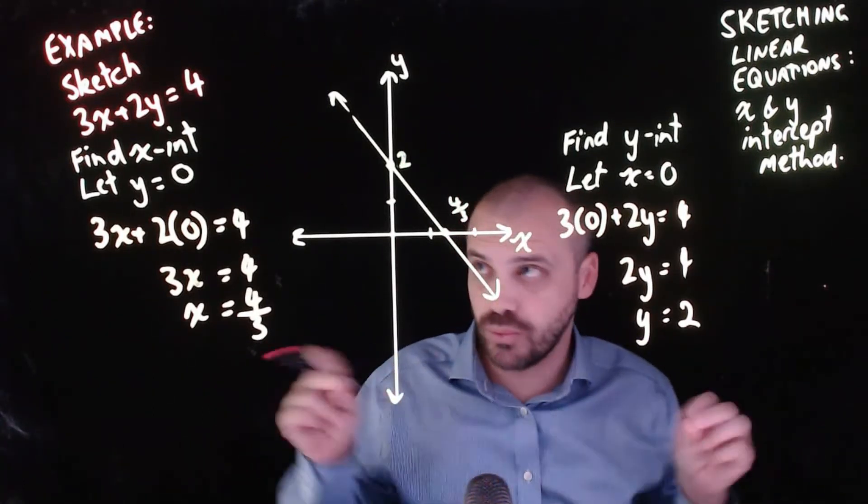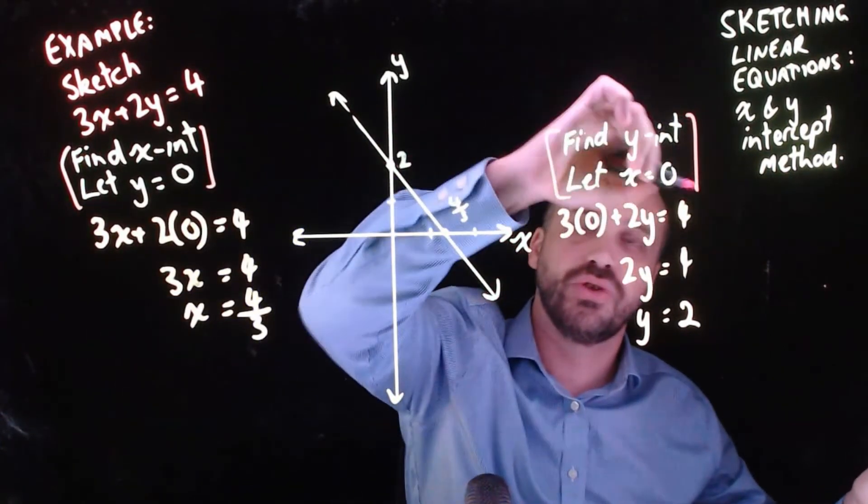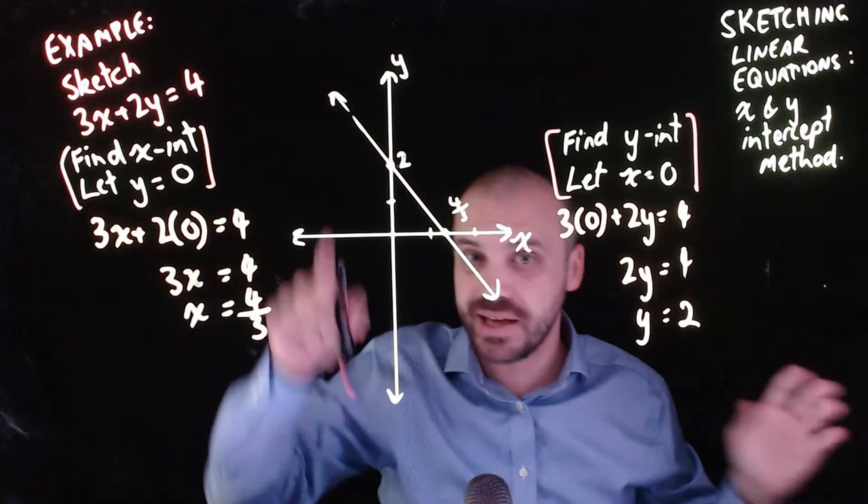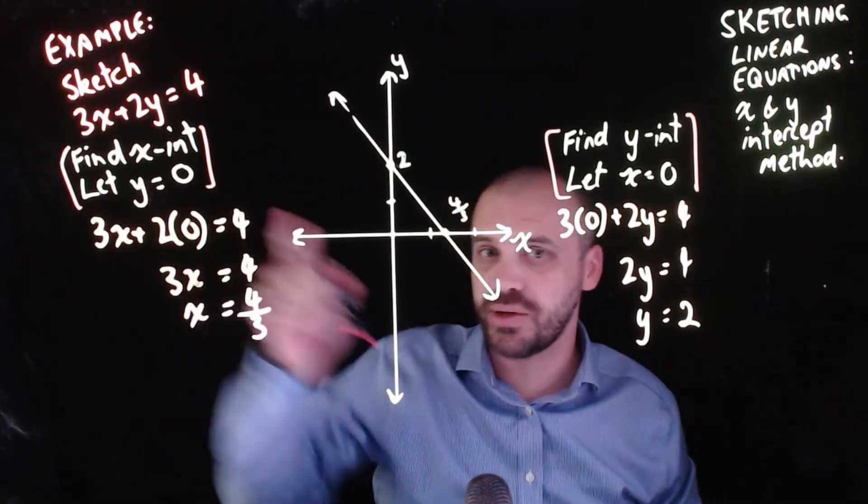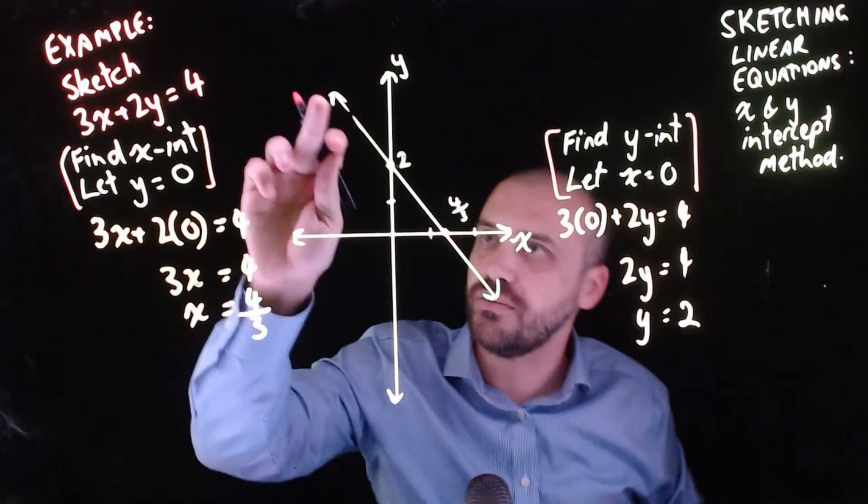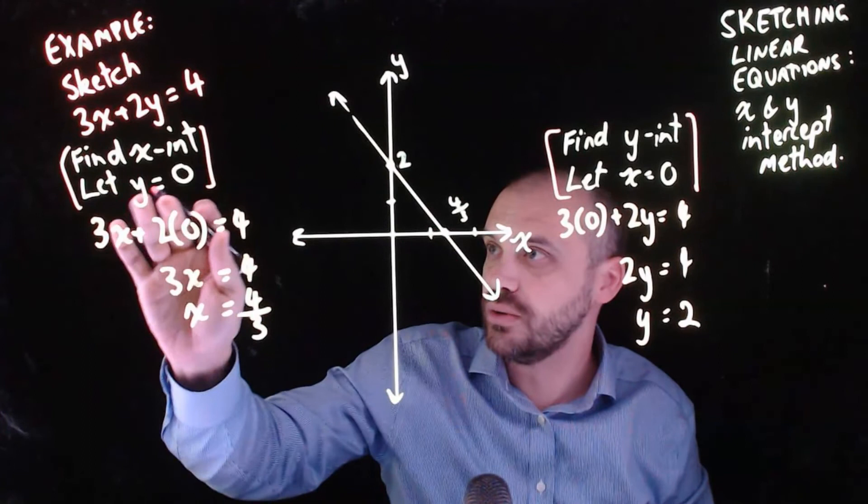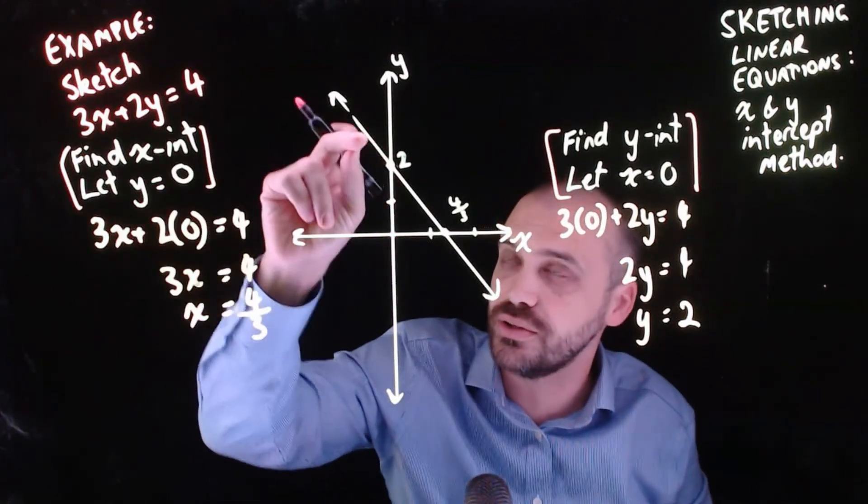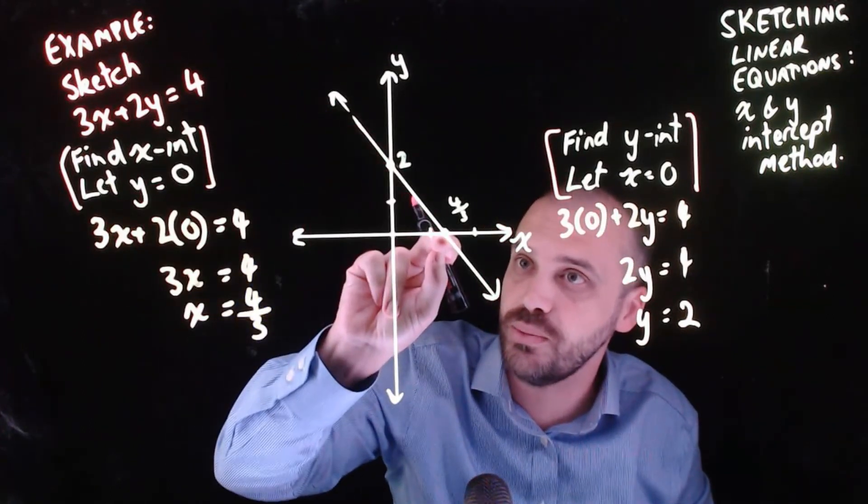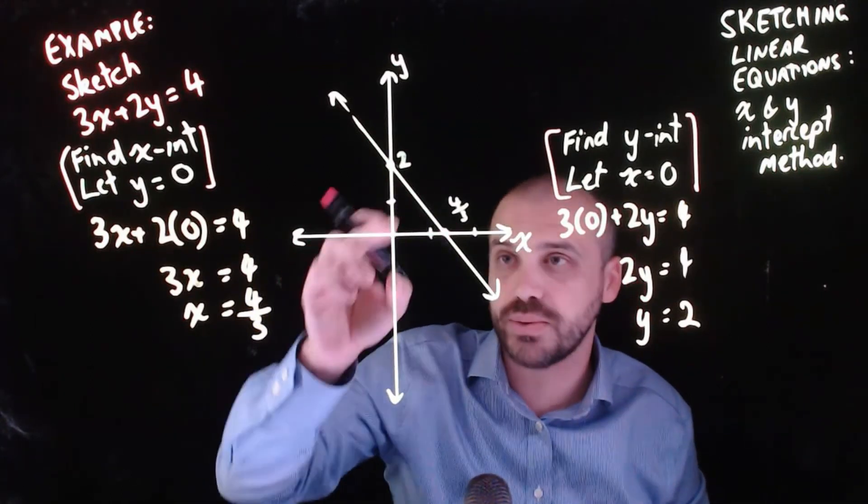Now I want to take a moment to explain why these sentences exist. To find the x intercept, let y equal 0. Why does that work? Well, the x intercept of this line is literally the point when y equals 0. When we're there on the y axis, we're at y equals 0.